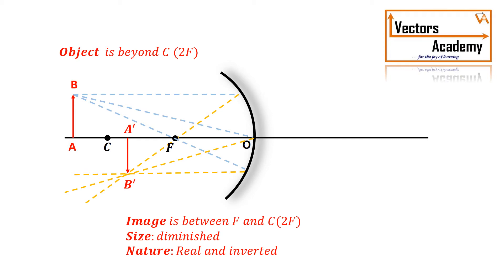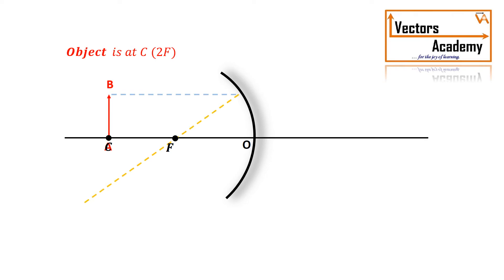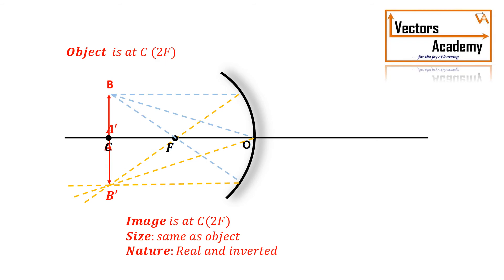When the object is placed at the center of curvature, the rays parallel to the principal axis pass through the focus. The rays going to the center get reflected at the same angle, and rays passing through the focal length get reflected parallel to the principal axis. The image formed is exactly at point C itself — it is inverted and of the same size.